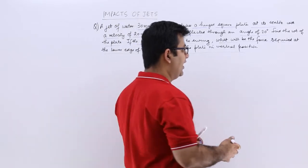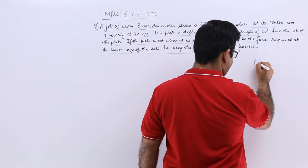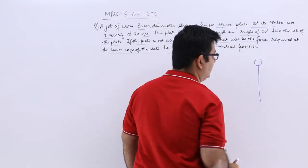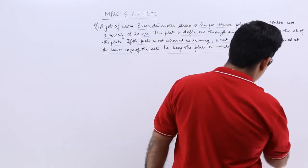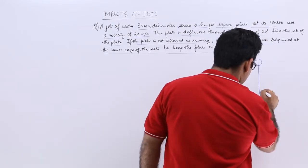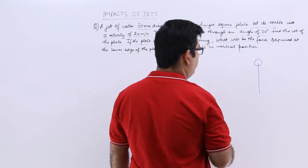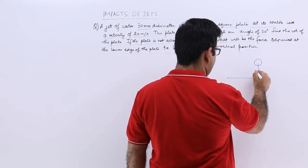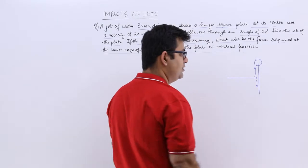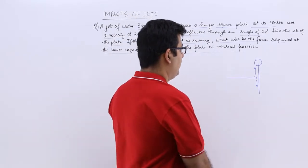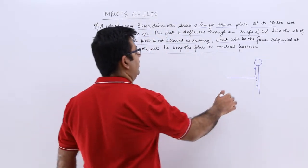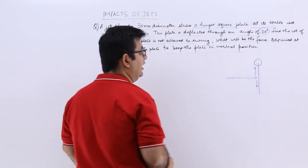So if you look at the diagram for it, this is the hinge, this is the plate, let's keep it vertical. Now the water strikes at the center, moves up and moves down like this. Initially, let's say it is being deflected by an angle of 20 degrees, so theta is 20.